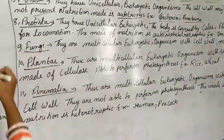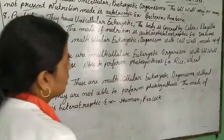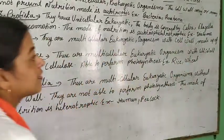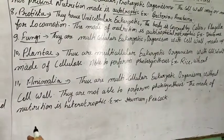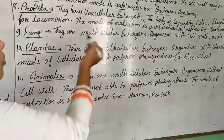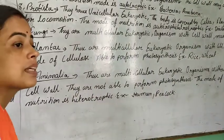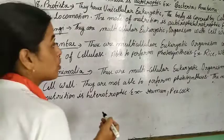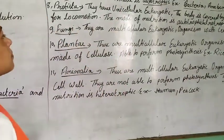Protista: they are unicellular eukaryotic organisms. The body is covered by cilia and flagella, which help in locomotion. Their mode of nutrition is autotrophic — they can make their own food by photosynthesis. An example is Diatom.